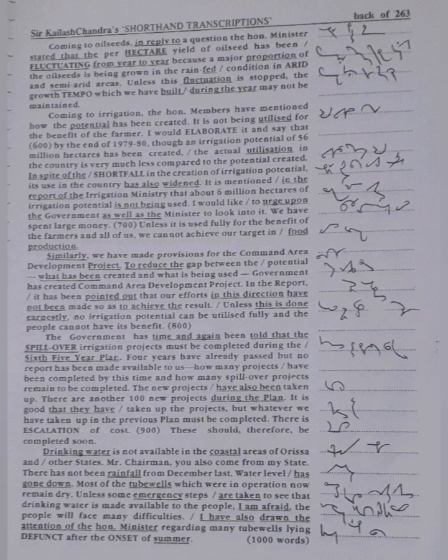Drinking water is not available in the coastal areas of Odisha and other states. Mr. Chairman, you also come from my state. There has not been rainfall from December last. Water level has gone down. Most of the tube wells which were in operation now remain dry. Unless some emergency steps are taken to see that drinking water is made available to the people, I am afraid the people will face many difficulties. I have also drawn the attention of the Honourable Minister regarding many tube wells lying defunct after the onset of summer.